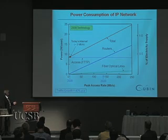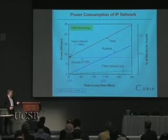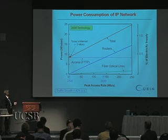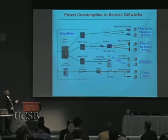Predicting a traffic growth rate of about 40% per annum, we'd be close to 140 megabits per second by 2020. With 2009 technology, routers would consume about the same power as the access network, and total network power would have doubled to around 1% of electricity supply.